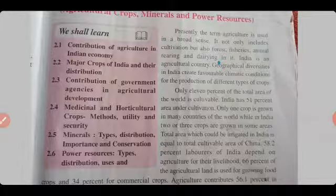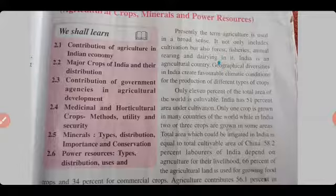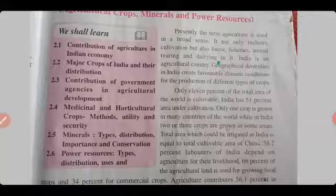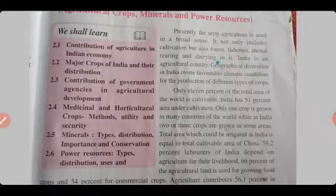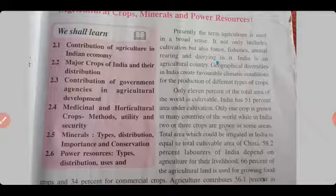India is an agricultural country. Geographical diversity in India creates favorable climatic conditions for the production of different types of crops.